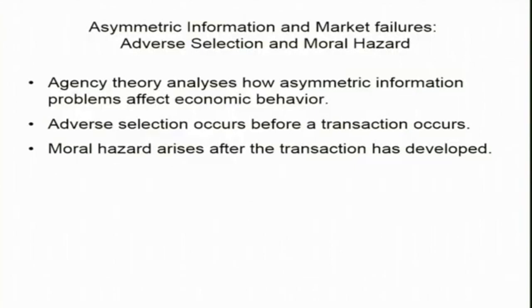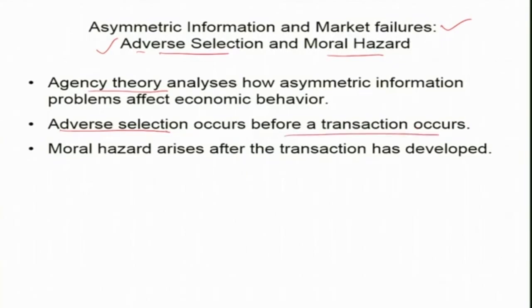Because of this asymmetric information, market failure happens. There are mainly two types: adverse selection, which we already discussed, and moral hazard, which we will discuss in a future session. This issue can be better understood by agency theory, which analyzes how asymmetric information problems affect economic behavior. Adverse selection occurs before a transaction occurs, while moral hazard arises after the transaction has been settled.